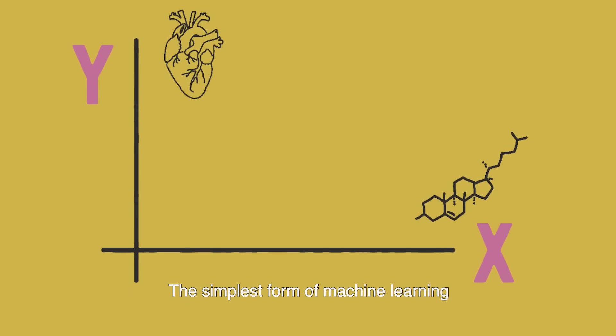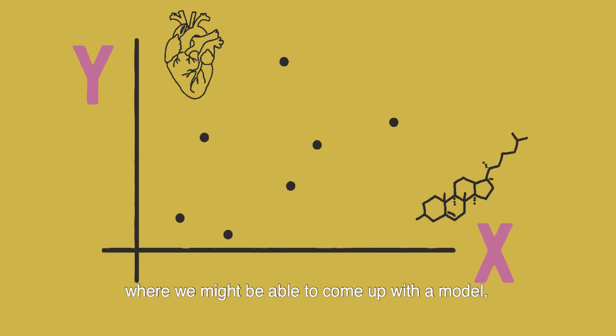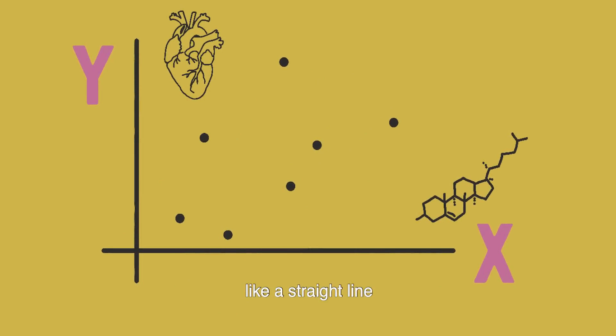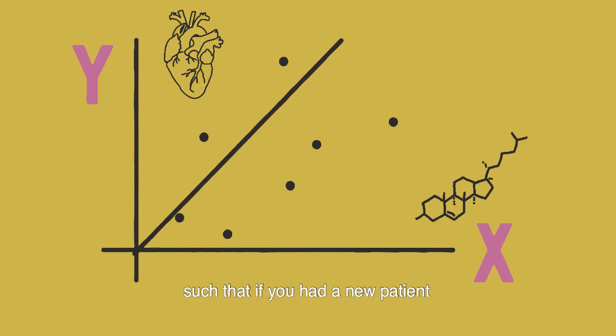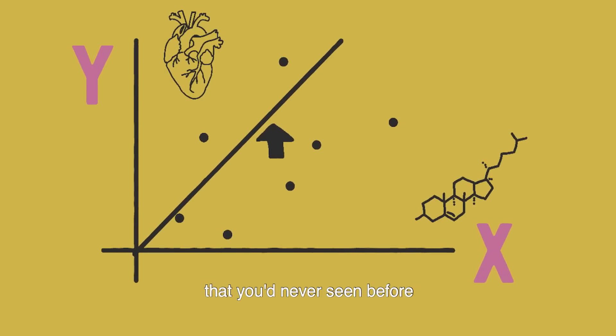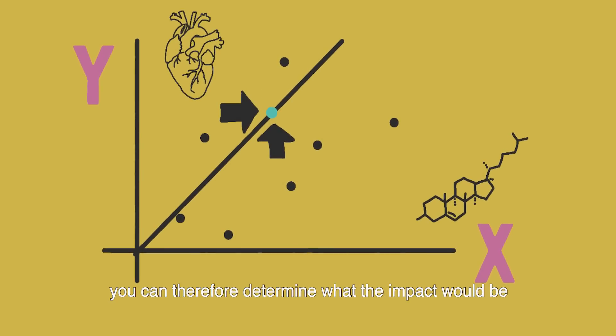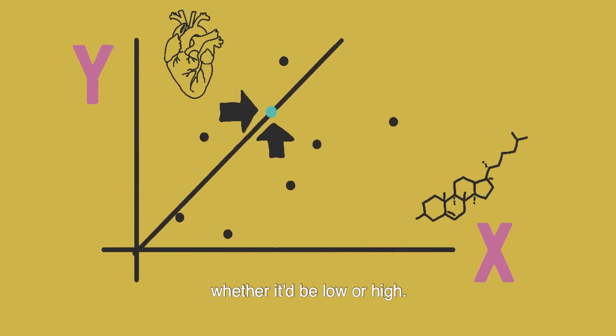The simplest form of machine learning is something we would call curve fitting, where you might be able to come up with a model, like a straight line that you put between these curves, such that if you had a new patient with a new value of cholesterol that you've never seen before, you can therefore determine what the impact would be, whether it be low or high.